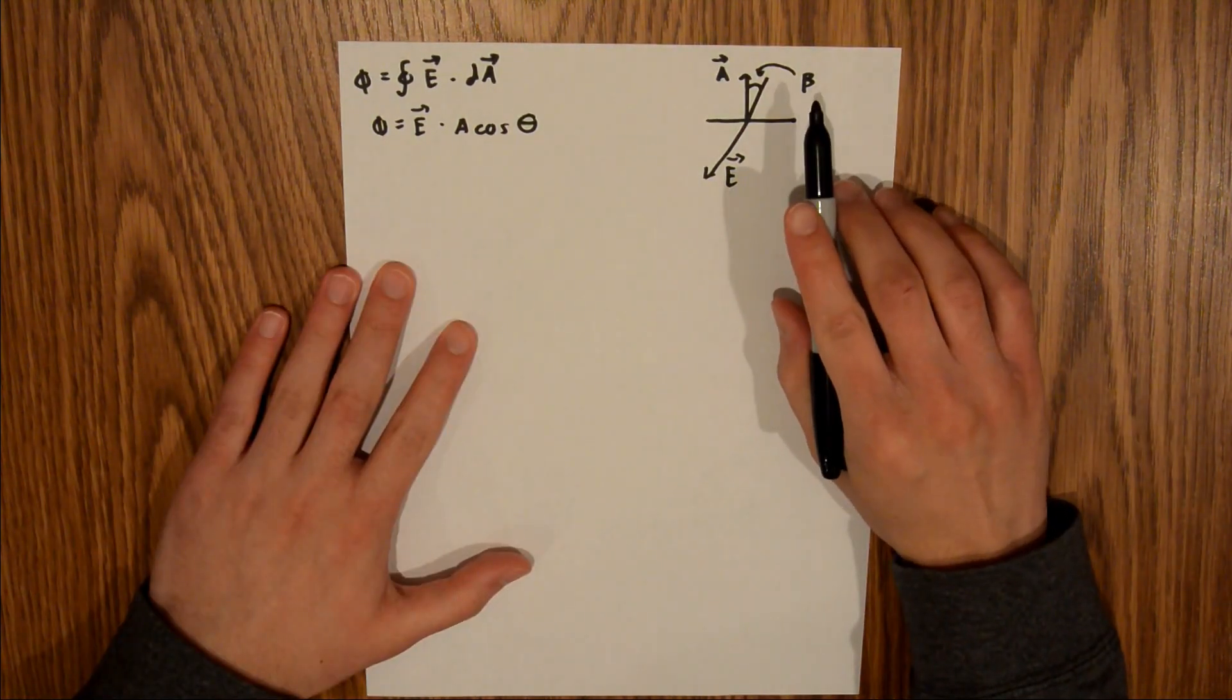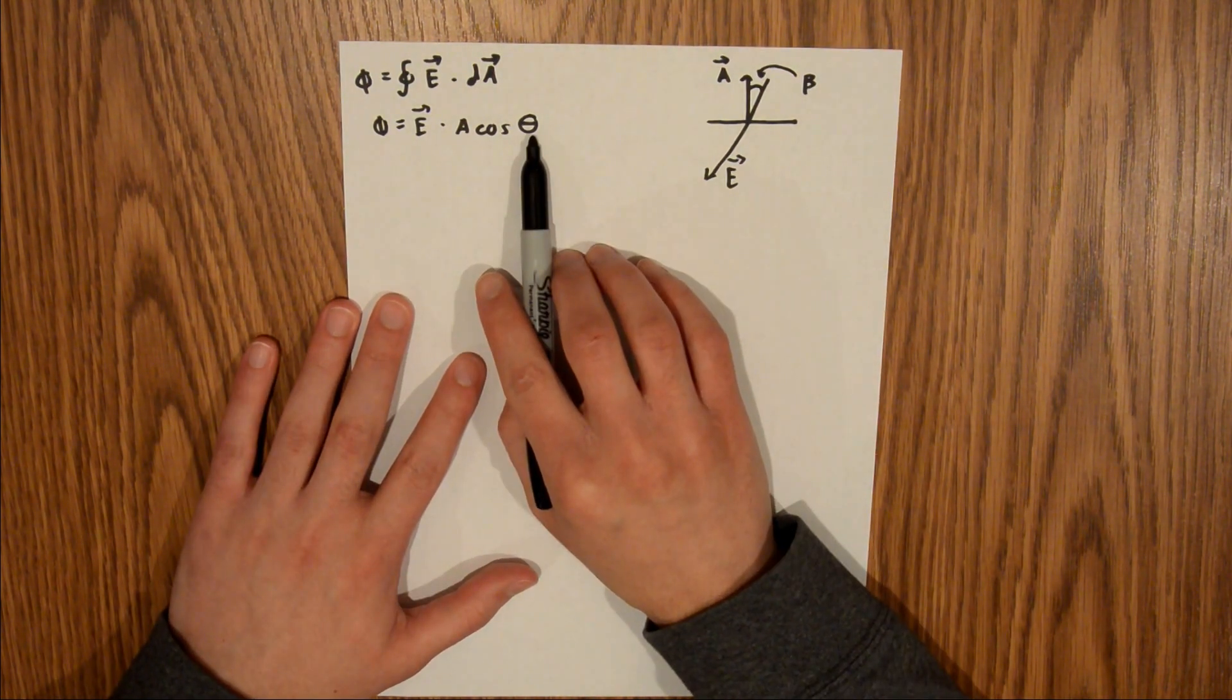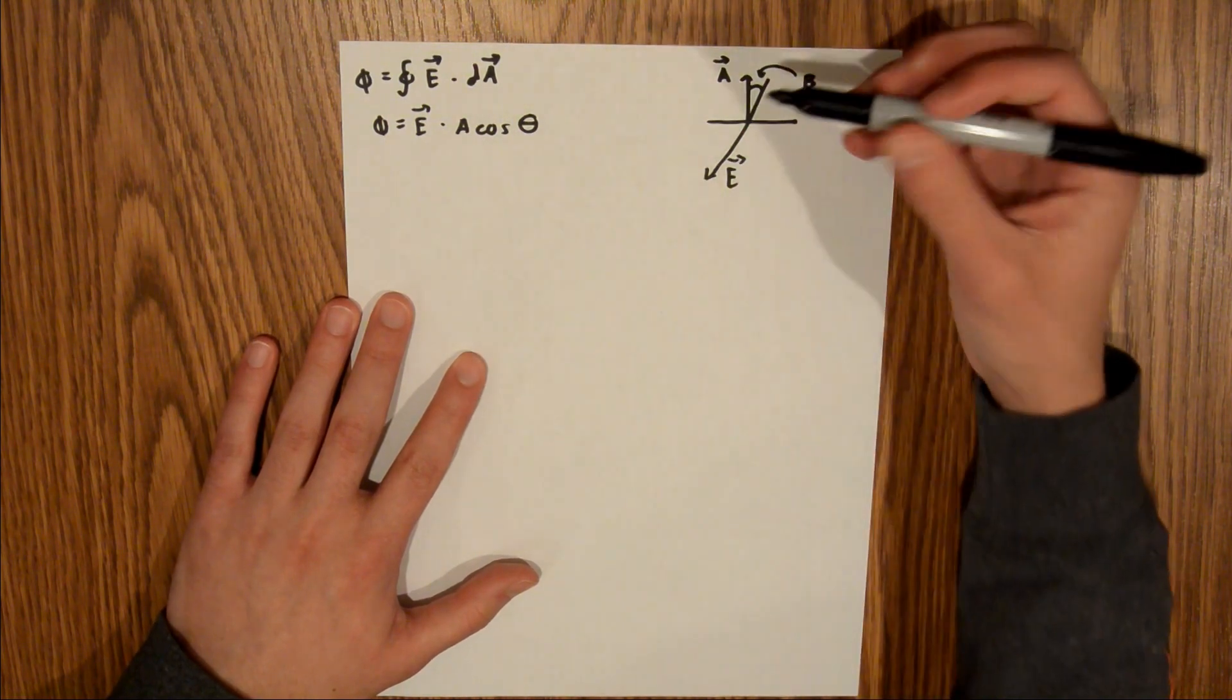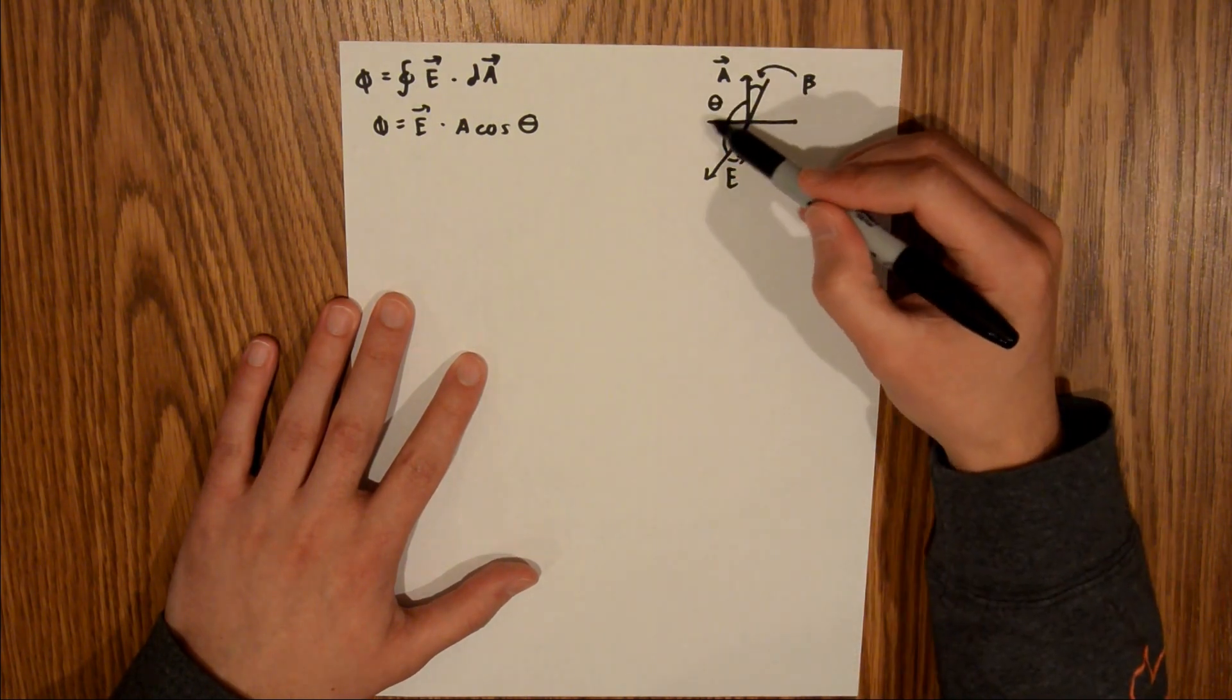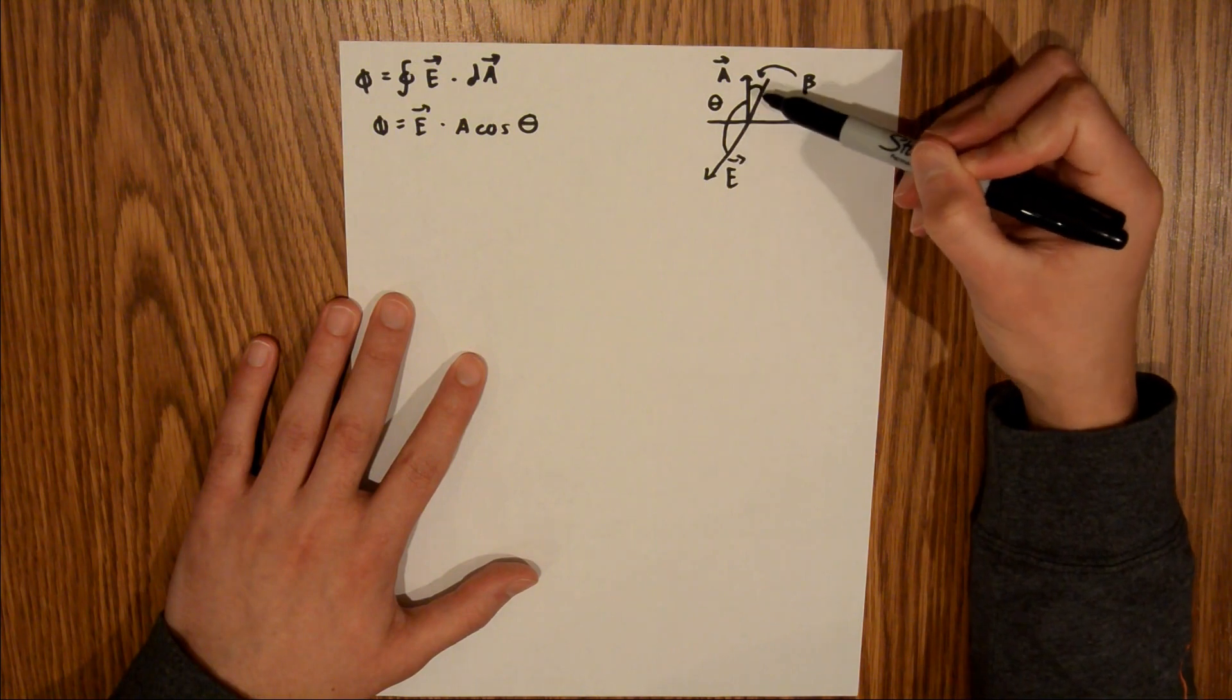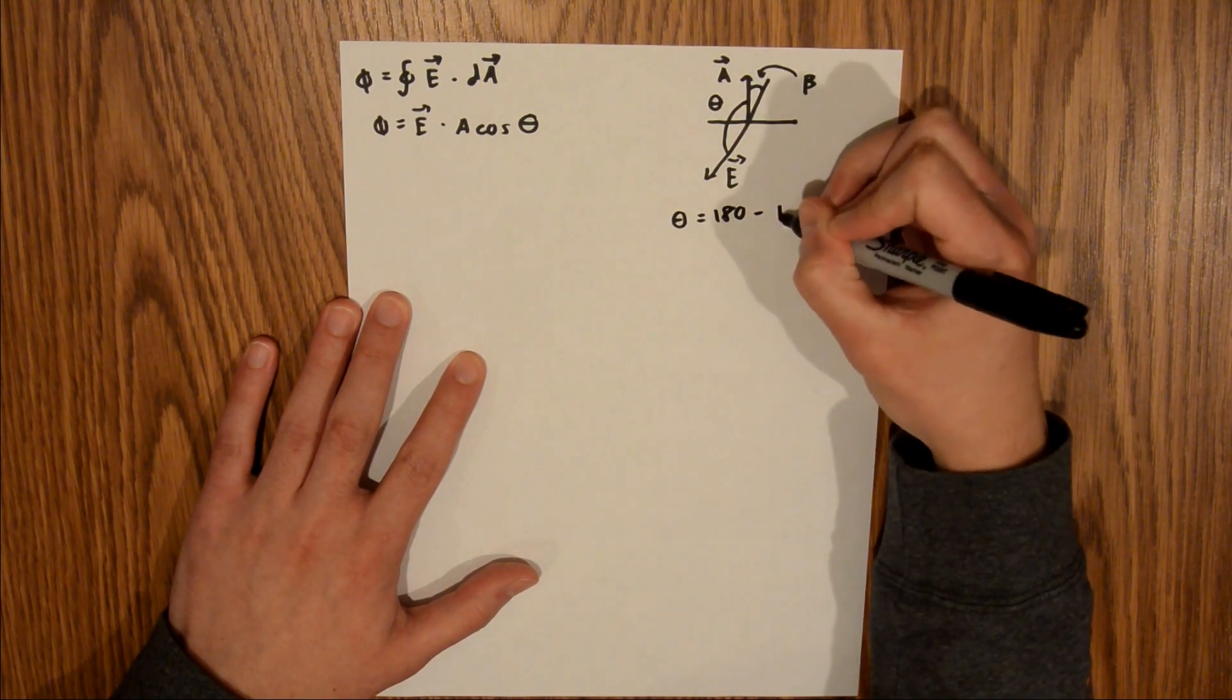The reason I marked this as beta is because this given angle is not the angle we plug in here. This angle is the angle between the electric field vector and the vector normal to the area. That would be this right here, and that is theta. To find this theta, we take this entire angle and subtract out beta. So theta equals 180 minus beta.